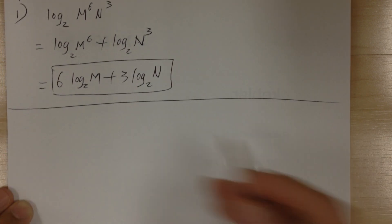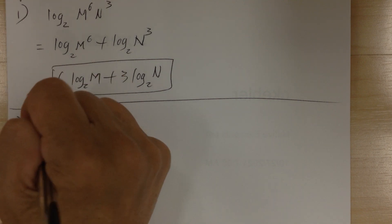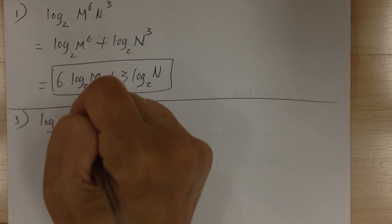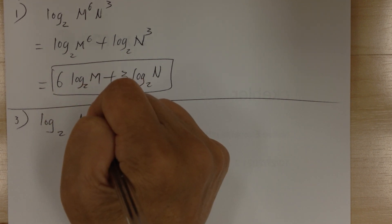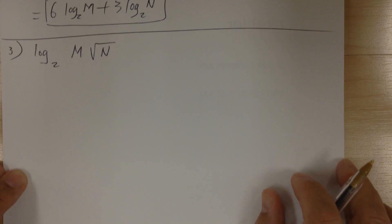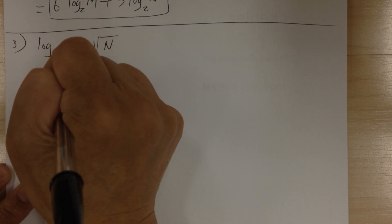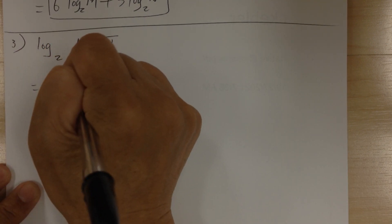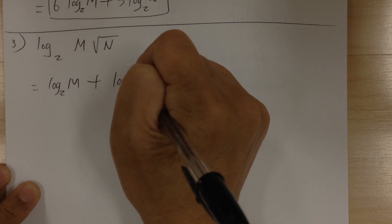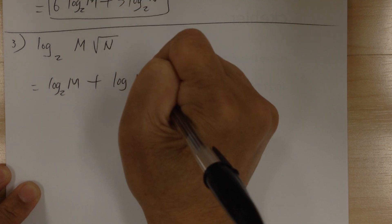Let's go to number 3. Log base 2 of m times square root of n. So you can first separate the 2. And instead of square root, I'm going to make it 1 half power.